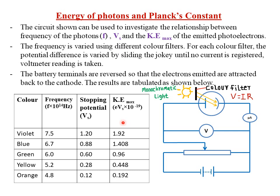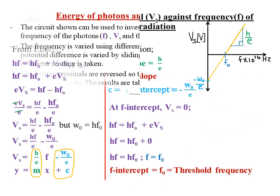Next, we analyze a graph of stopping potential Vs against the frequency f of the incident radiation. From the table in the previous slide, we clearly saw that the higher the frequency of incident radiation, the higher the stopping potential, and the lower the frequency, the lower the stopping potential. This is a direct proportionality relationship, represented graphically by a straight line graph as shown here.